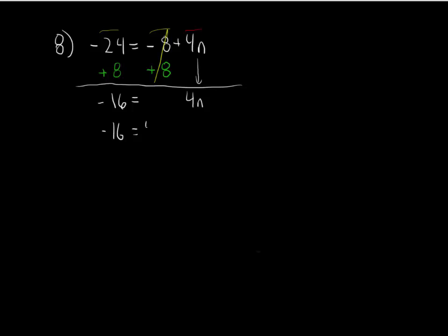Negative 16 is equal to 4n. If it helps, we can show the result of adding positive 8 to the right side of the equation, but then 0 plus 4n won't change anything.